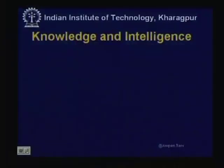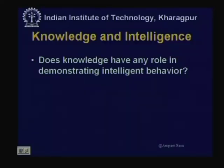Before delving into the details of knowledge representation, let us first look at what is meant by intelligence and how knowledge is related to intelligence. There are different ways of interpreting knowledge. Philosophers, scientists, logicians, and psychologists have all given some meaning to intelligence. What is the role that knowledge plays in intelligent behavior? Let us first try to address the question: does knowledge have any role at all in demonstrating intelligent behavior?